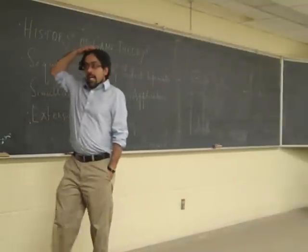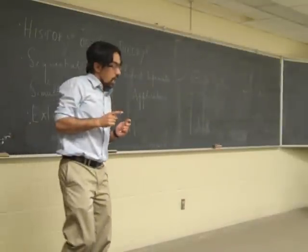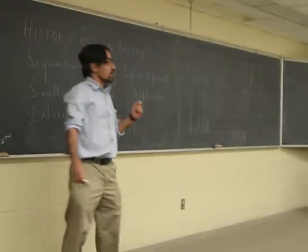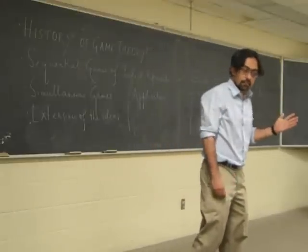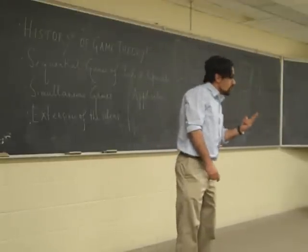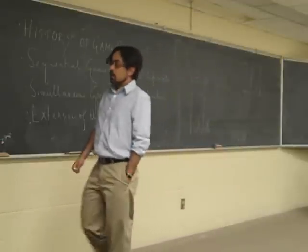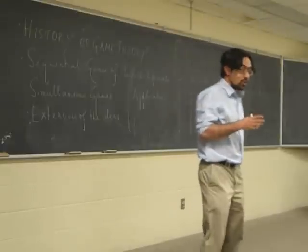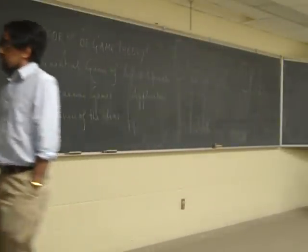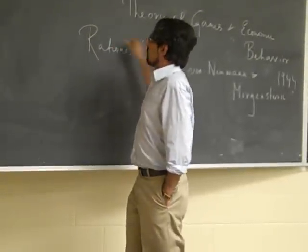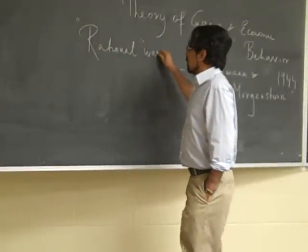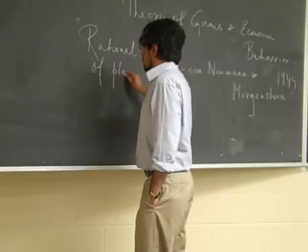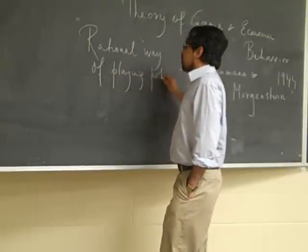So, his idea, what he was trying to do in this book, is trying to find out a rational way of playing games. If you are a super rational individual who can calculate millions of steps ahead, how would two super rational individuals play a typical game? And his primary interest was poker, so he wanted to see what is a rational way of playing poker.